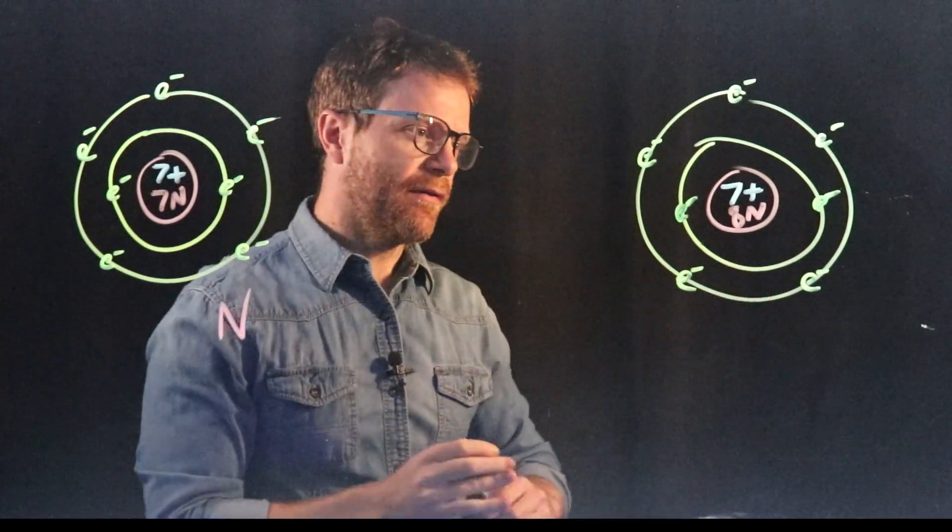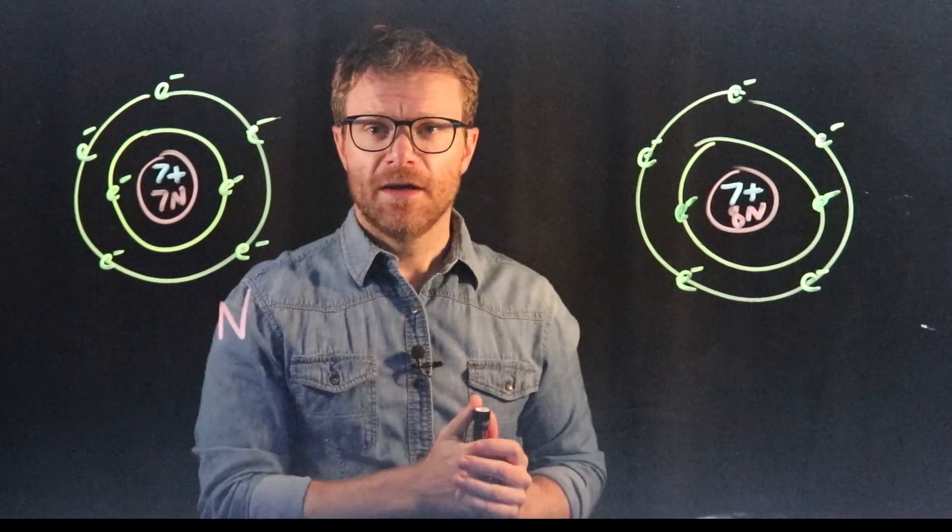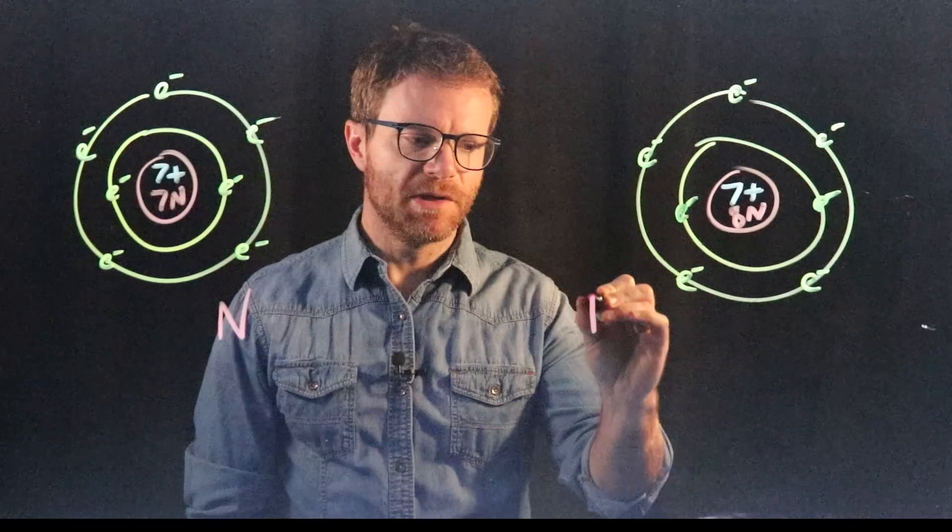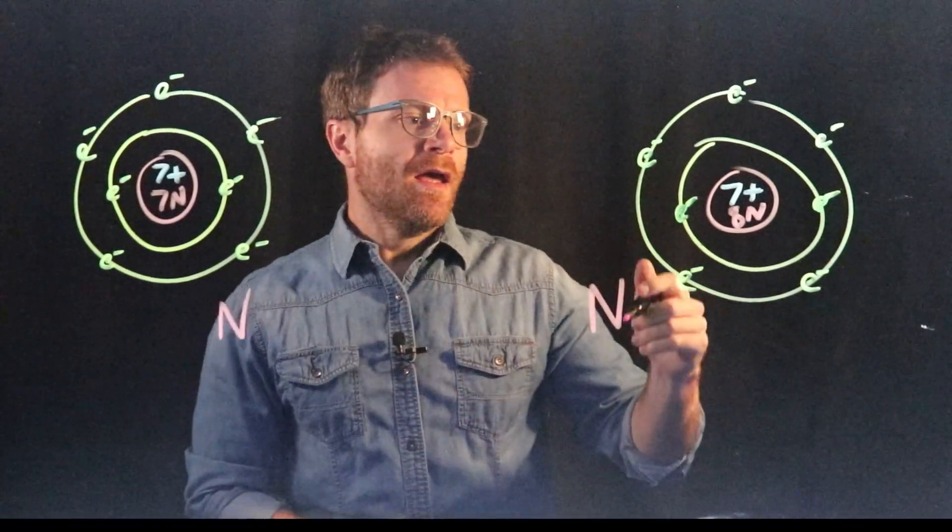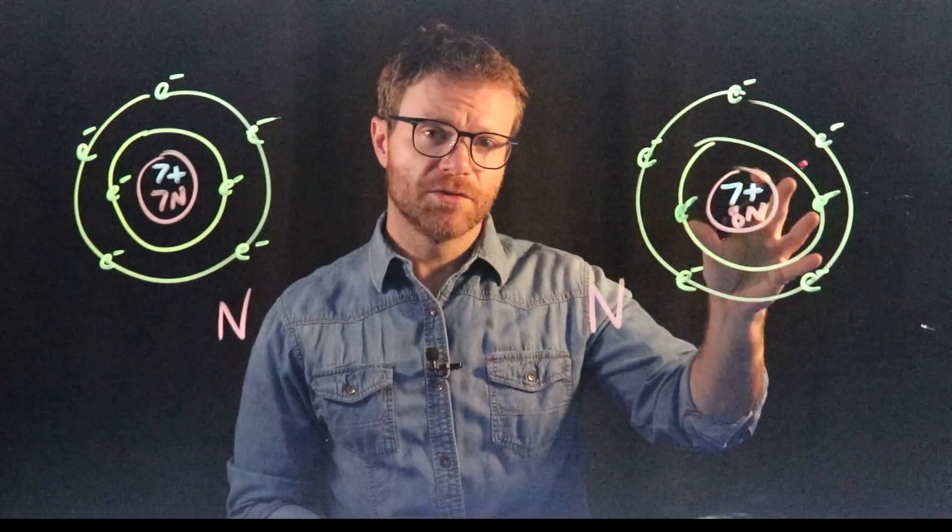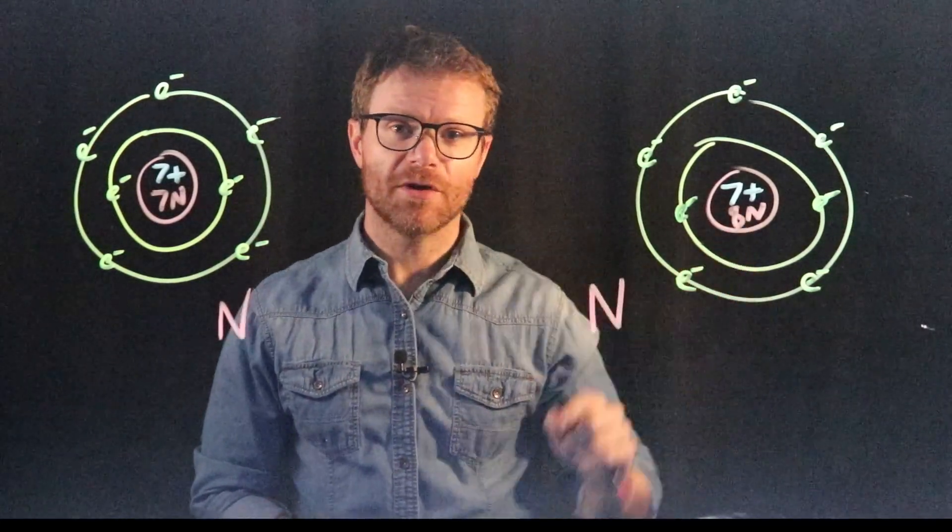Over here we have an atom, and in that nucleus there are seven protons, and if it has seven protons, therefore its atomic number must be seven, and this element must be nitrogen as well. And this element also has seven electrons, two in the first energy level and five in the second, but it has eight neutrons.